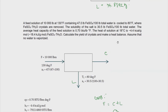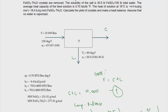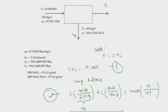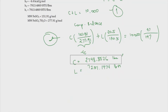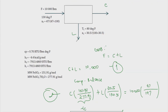The next question asks us to make a heat balance and find Q. We assume no water is vaporized. Let's do the enthalpy balance first, as that's the first step.